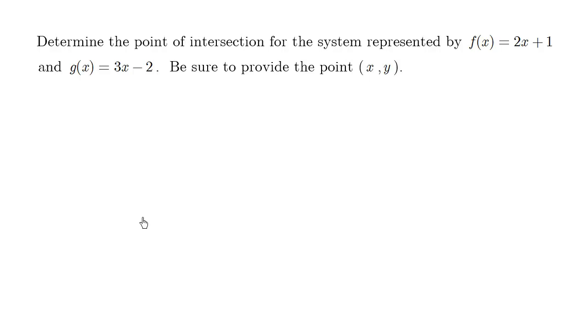Let's try the system's problem. Determine the point of intersection for the system represented by f of x equals 2x plus 1 and g of x equals 3x minus 2. So we want the point in this nice ordered pair format.